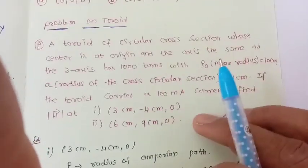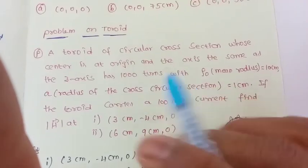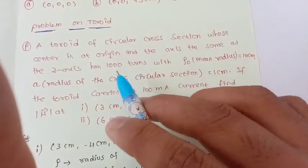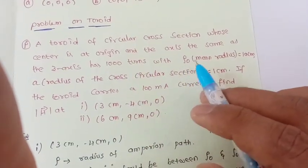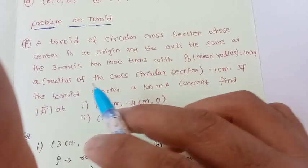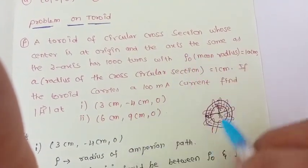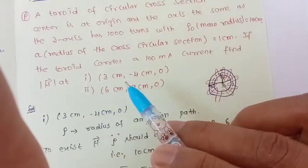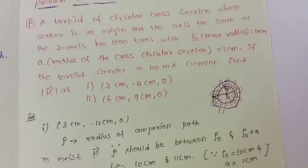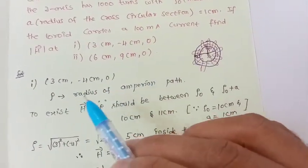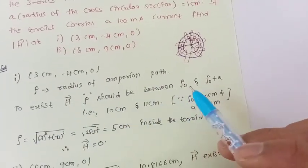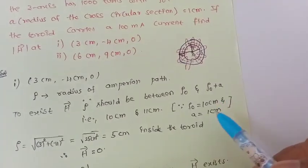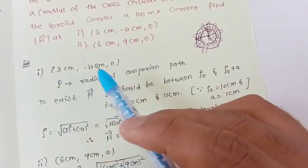Don't be intimidated by the size of the problem — focus on the concept. A toroid of circular cross-section centered at the origin with its axis along the z-axis has 1000 turns. The inner radius ρ₀ = 10 cm, the cross-section radius a = 1 cm, so the outer radius is 11 cm. The toroid carries 100 milliamperes. Find H at (3, −4, 0) and (6, 9, 0).